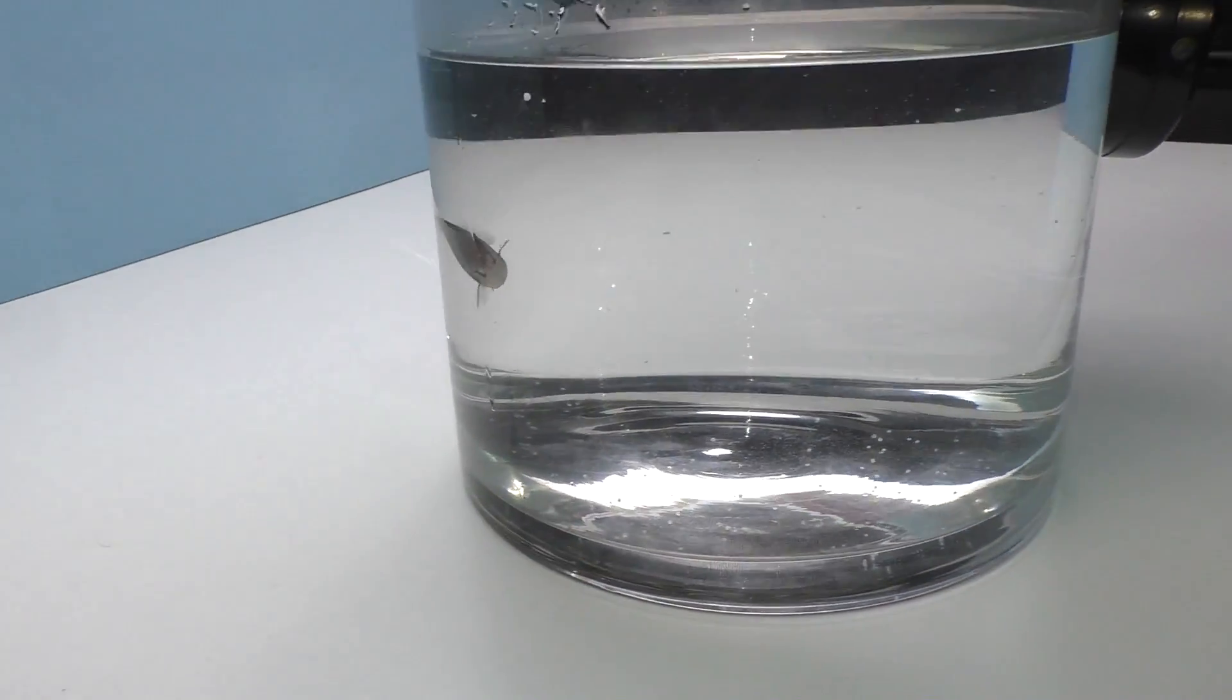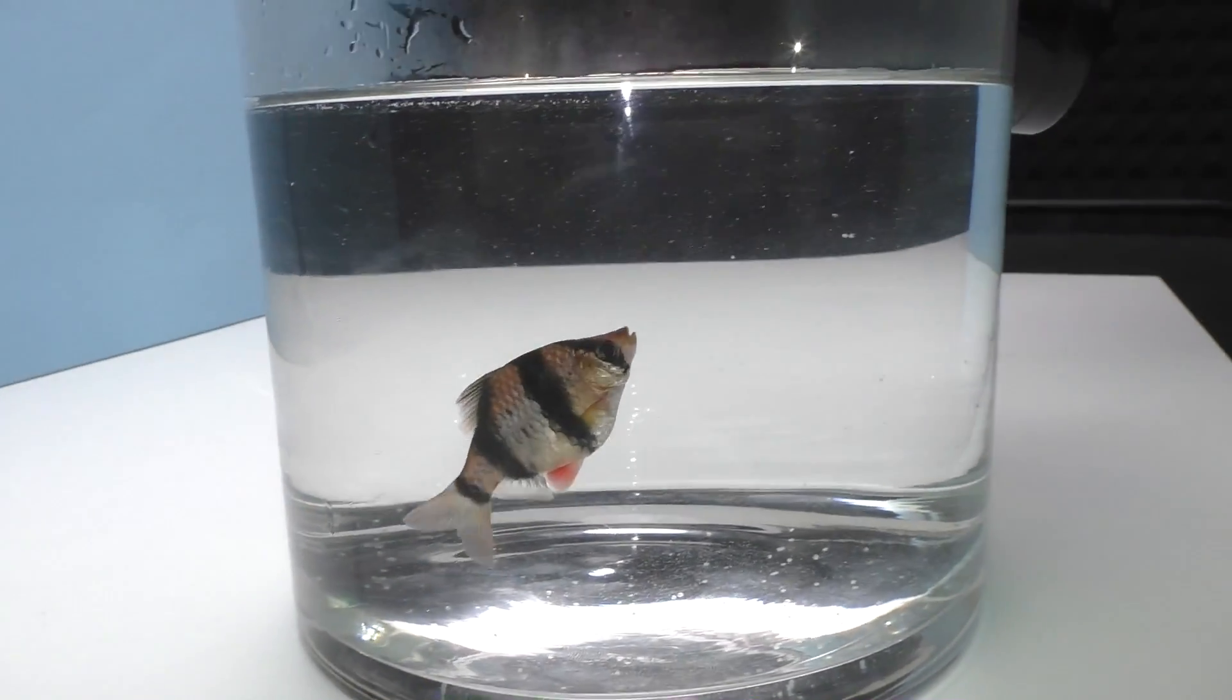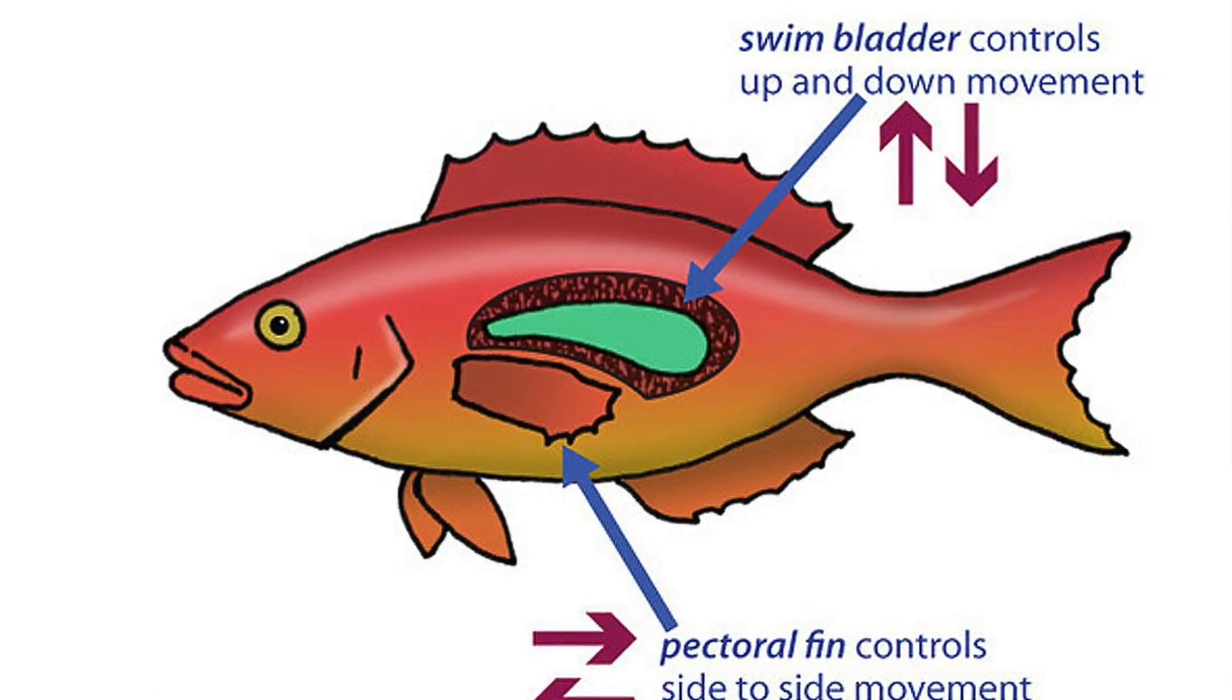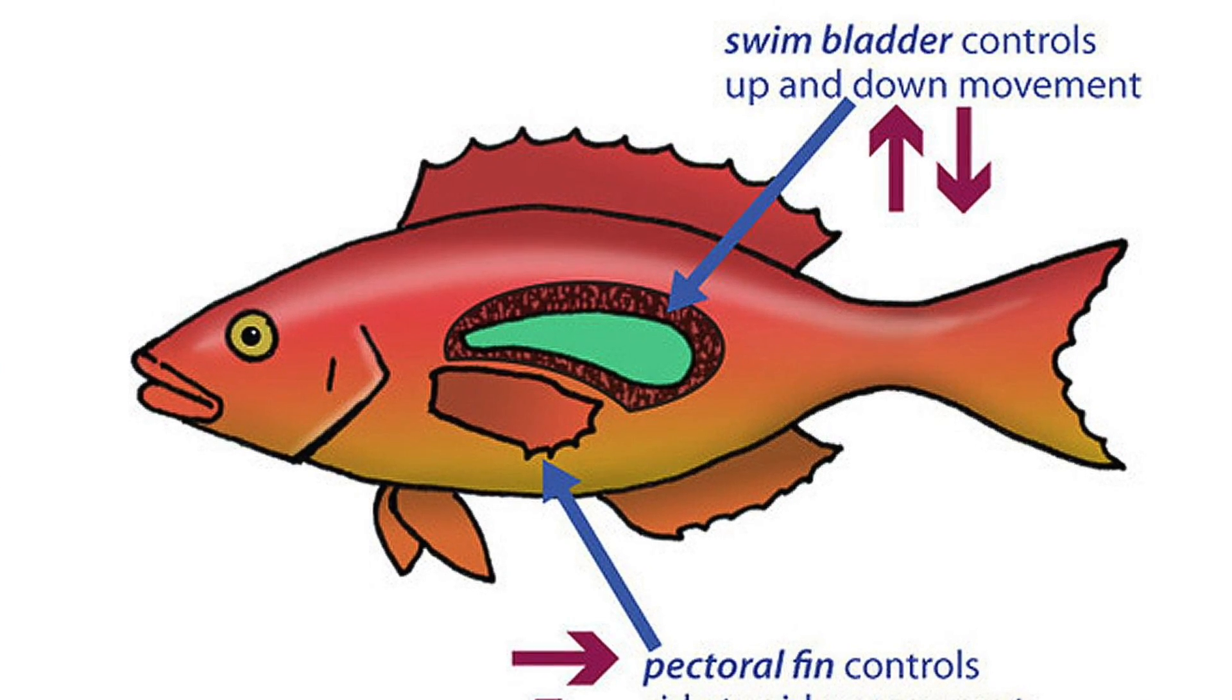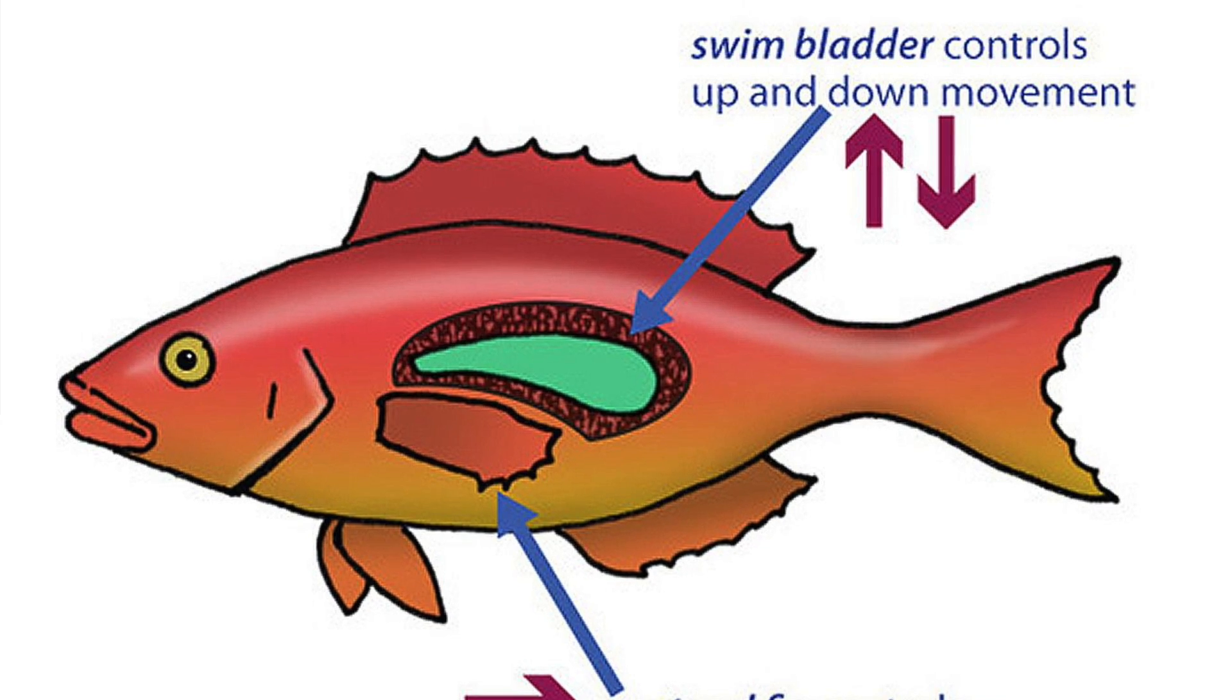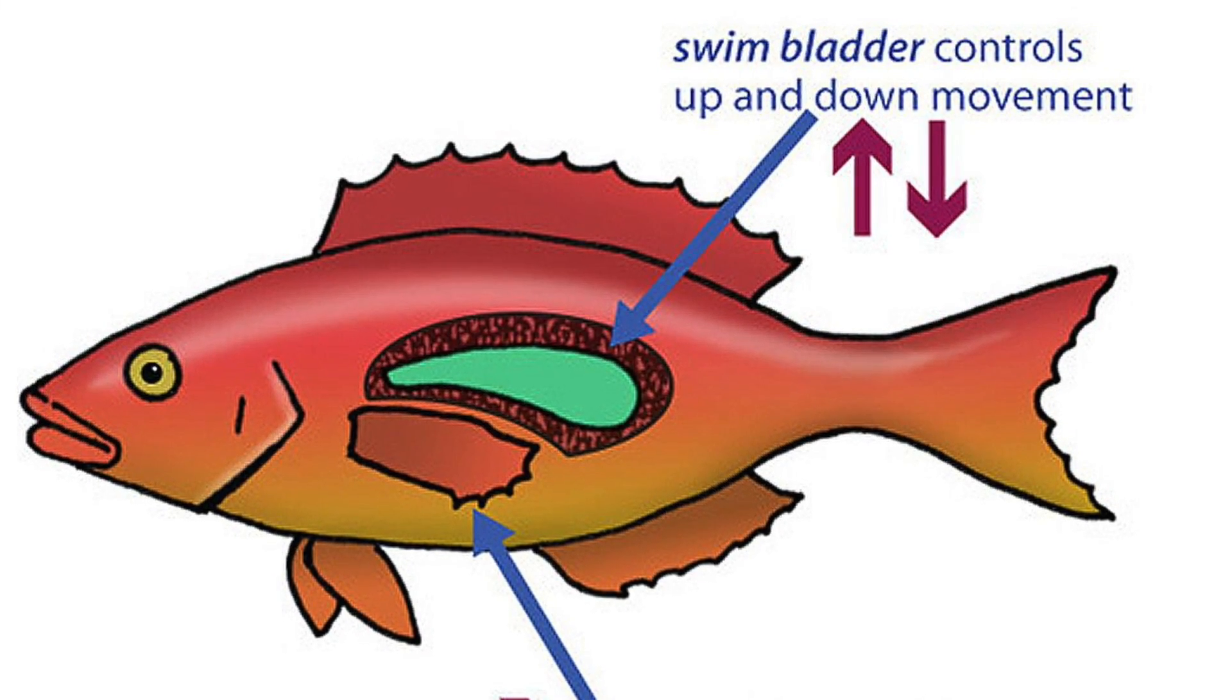And the fish began to swim again. And there is the secret. In the body of the fish, there is a swim bladder or air bladder. The fish inflates it itself to change the depth of swimming.